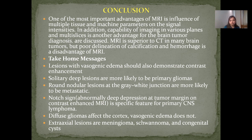Conclusion: One of the most important advantages of MRI is the influence of multiple tissue and machine parameters on signal intensity. Imaging capability in various planes is another advantage for brain tumor diagnosis. MRI is superior to CT in many brain tumors, but poor delineation of calcification and hemorrhage is a disadvantage. Take-home messages: lesions with vasogenic edema should also demonstrate contrast enhancement. Solitary deep lesions are most likely primary glioma. Ring or nodular lesions at the grey-white matter junction are more likely metastatic. The notch sign — abnormal deep indentation at the tumor margin on contrast-enhanced MRI — is a specific feature for primary CNS lymphoma. Diffuse glioma affects the cortex; vasogenic edema does not. Extra-axial lesions include meningioma, schwannoma, and congenital cysts.